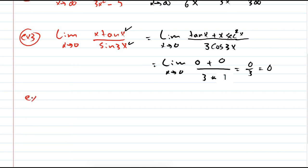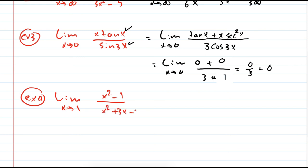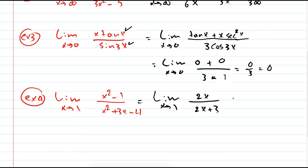Example 4: the limit as x approaches 1 of (x² minus 1) over (x² + 3x minus 4). Directly evaluating gives 1 minus 1 over 1 plus 3 minus 4, which is 0 over 0. So I use L'Hôpital's rule: the derivative of the top is 2x, and the derivative of the bottom is 2x plus 3. Evaluating at x = 1 gives 2 times 1 = 2 over 2 times 1 plus 3 = 5. So the limit equals 2 over 5. That's the usage of derivatives. Let's go to the next lecture to see other indeterminate forms.